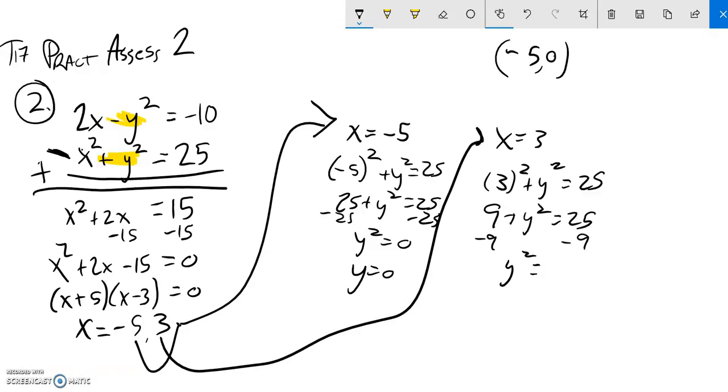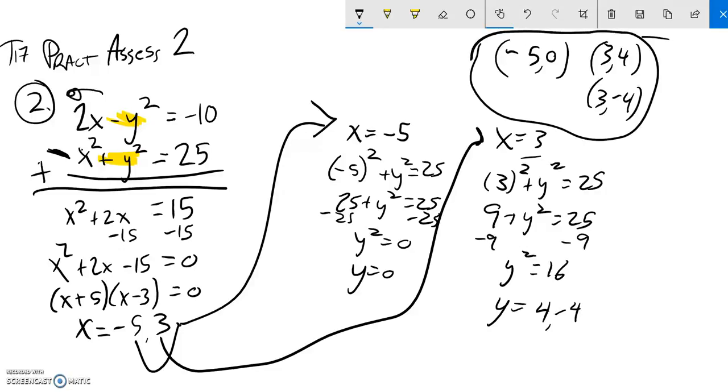If I square root both sides, notice that y is 4, but it's also negative 4 because both of those squared give me 16. So when x is 3, y is 4, and when x is 3, y is also negative 4. So there are three points where these two shapes hit each other on a graph.